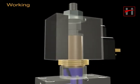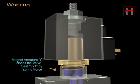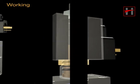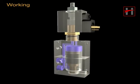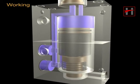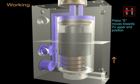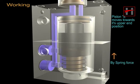The magnet armature closes the valve seat V21 by spring force. Valve seat V11 is open. The piston moves towards its upper end position by spring force.